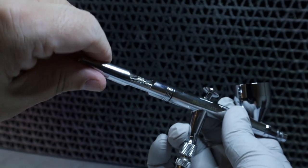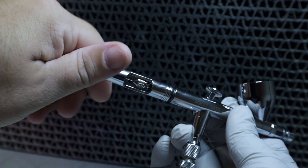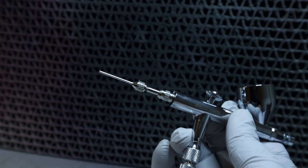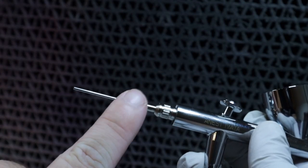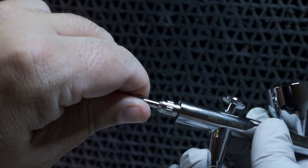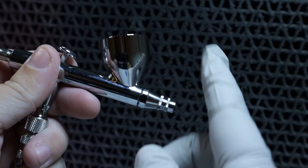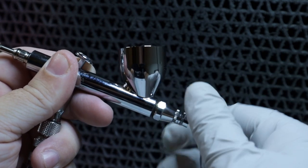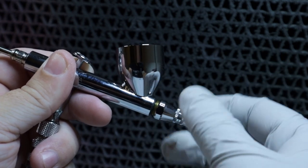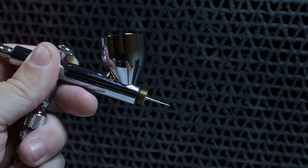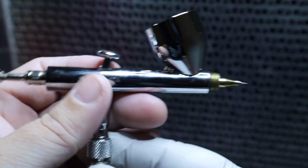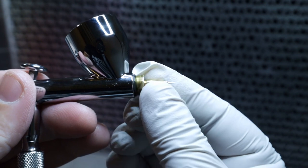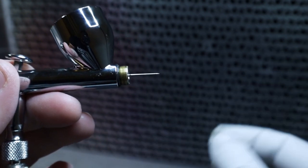Next we're going to start disassembling the airbrush by removing the back body section first. The next step is to loosen the needle chucking nut, not remove it completely. Next we're going to remove both the needle cap and the nozzle cap at the same time by unscrewing it from the front end here. Depending on the airbrush model, your nozzle may still be attached. You can go ahead and remove that now too.